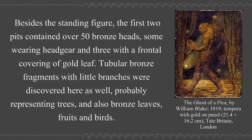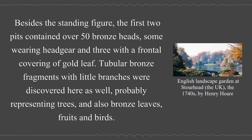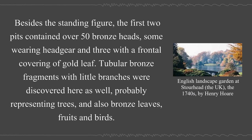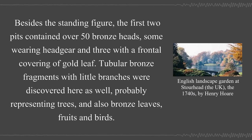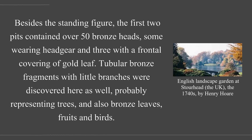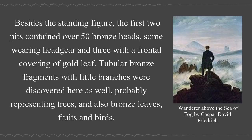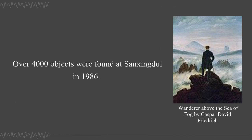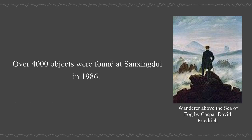Besides the standing figure, the first two pits contained over 50 bronze heads, some wearing headgear and three with a frontal covering of gold leaf. Tubular bronze fragments with little branches were discovered here as well, probably representing trees, and also bronze leaves, fruits, and birds. Over 4,000 objects were found at Sanxingdui in 1986.